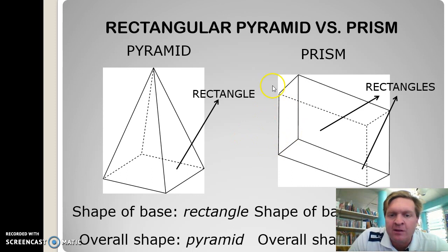Given that they are a rectangle, that gives it its name, the rectangular prism.